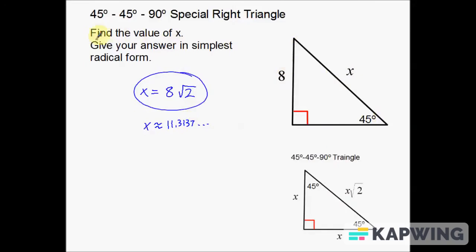Also the directions here, find the value of x, give your answer in simplest radical form. That's why I circled this one, because 8 times the square root of 2, that is simplest radical form. This decimal is definitely not radical form, so we would not include that in our answer. Okay, so that's a pretty simple first example.